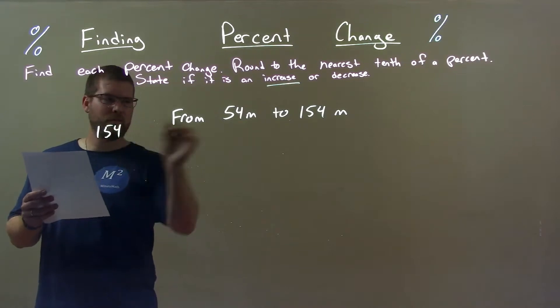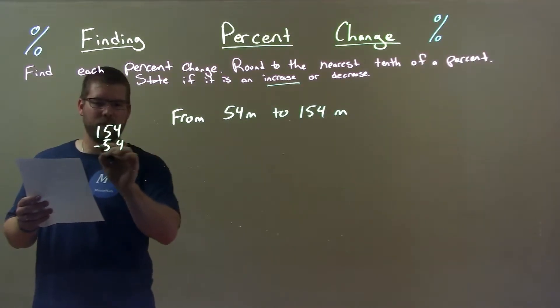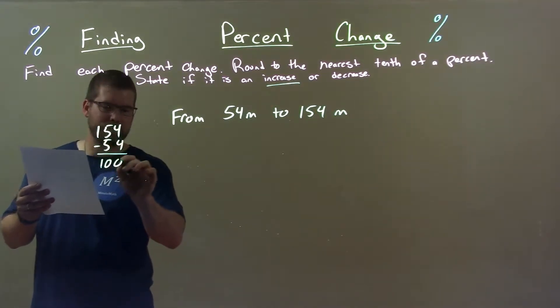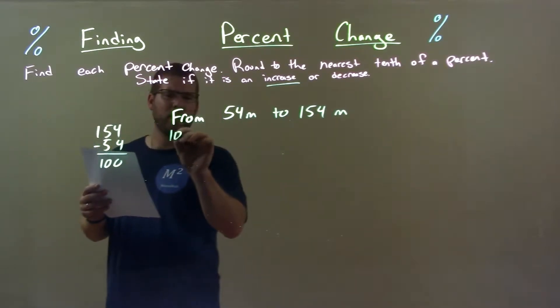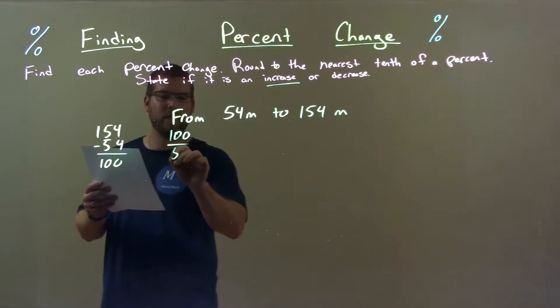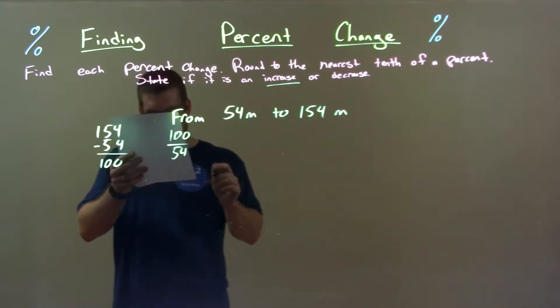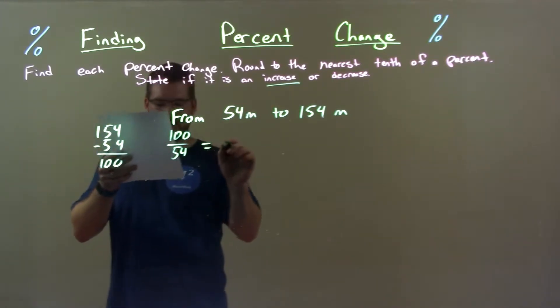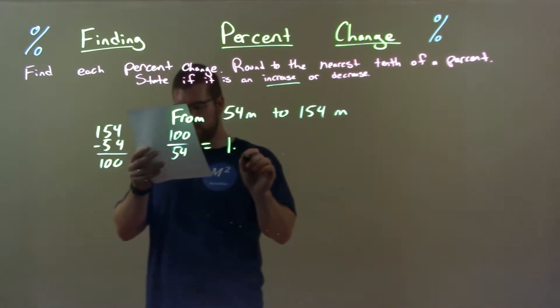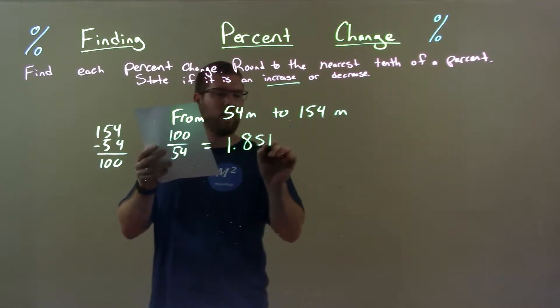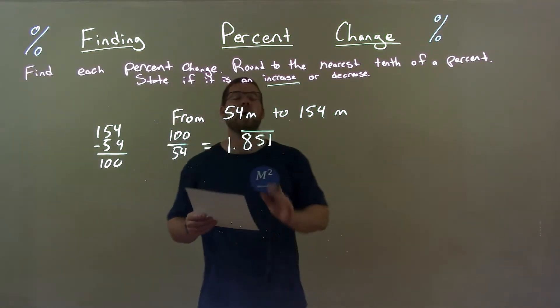All right, that's easy, that's 100. So we take the number 100 divided by the first number 54. This gives us actually an exact answer here with repetition: 1.851 and 851 is repeating all together.